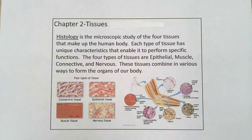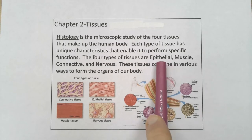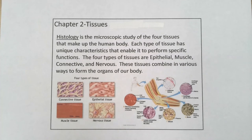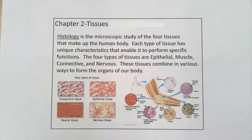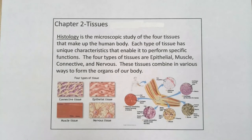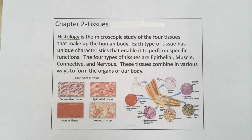Chapter two covers the tissues of the human body. We are going to study histology when studying tissues, and those four primary tissue types are known as epithelial, muscle, connective, and nervous tissue. Each of these has specific functions, and within each of those four categories there are specific tissue types we will discuss. All these different tissues combine in various ways to form the organs of our bodies.